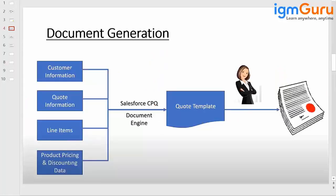Basically, a code template is nothing but having information about the customer, code information, the line items which you have selected, and the product pricing, or any kind of discounting you are giving. Consolidating all these details — customer information, code information, the product selected, any markup, any discount, any subscription — all those details captured over the quote line will populate in the Salesforce CPQ document engine, which will actually come in the format of the code template.